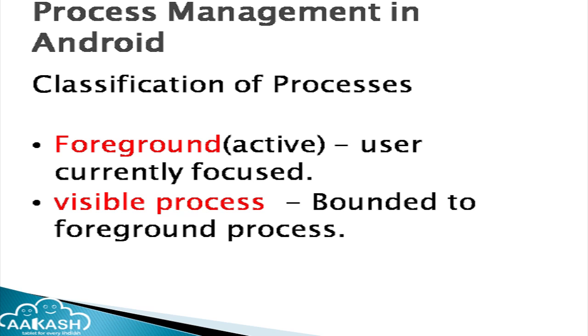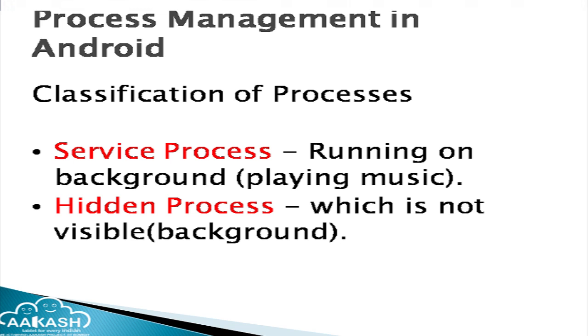Coming to process management in Android: Android classifies all applications into different groups. Foreground means the applications the user is currently interacting with. Visible are applications which are in the background but supporting foreground applications. Coming to the service process, these are apps running in the background using the service component. Android applications have 4 components: activities, services, content providers, and broadcast receivers. Apps running in the background using service components come under this category.